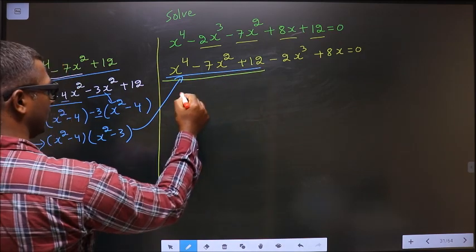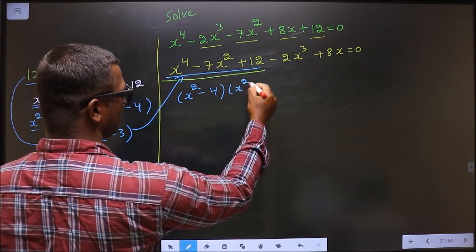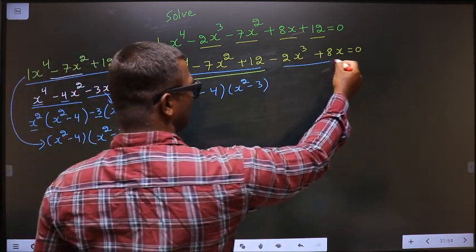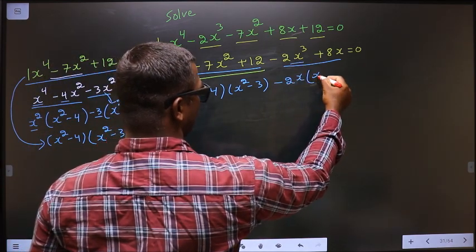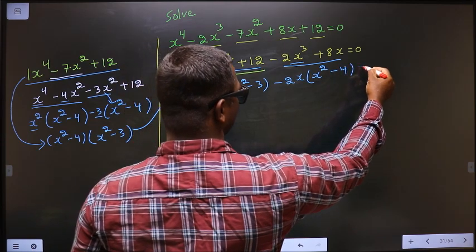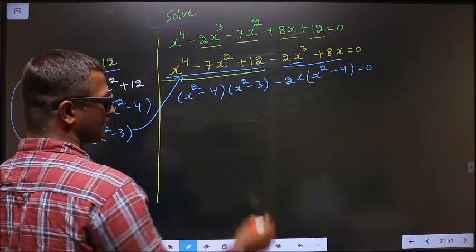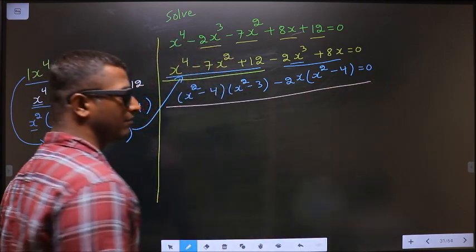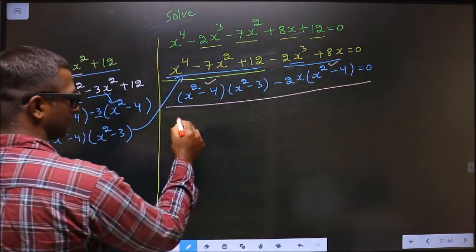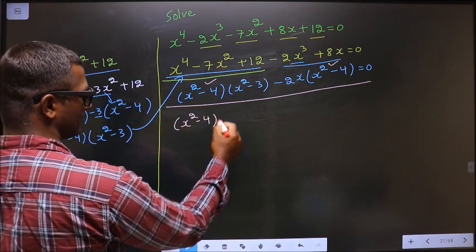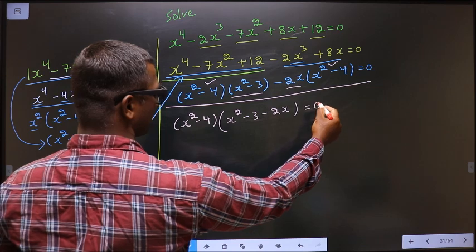In place of those 3 terms, I now write (x² - 4)(x² - 3). From the remaining 2 terms, -2x can be taken out as common, giving -2x(x² - 4). Note: minus × minus = plus, so -2x × -4 = +8x. From the entire equation, taking out x² - 4 as common, I get (x² - 4)(x² - 3 - 2x) = 0.